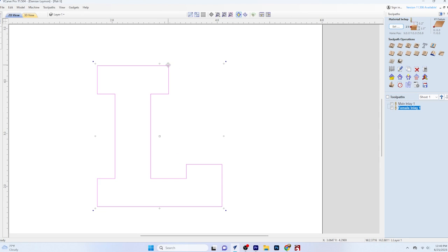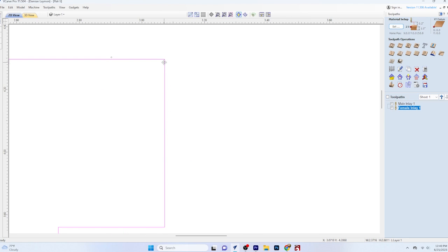So we select that, and then we can either use both a profile and a pocket, or we can use the inlay toolpath. Now, I prefer to use the inlay toolpath because the inlay toolpath is going to recognize that whichever bit you use is not going to be able to get into those sharp corners.